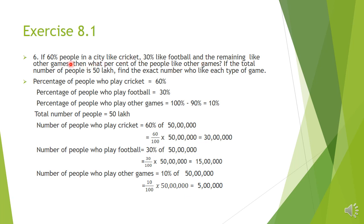The percentage of people who like different games are given: cricket-liking people 60%, football-liking people 30%, and the remaining like other games. To find the percentage for other games, we subtract 60% and 30%, getting 90%, and then subtract from 100%. So 100% minus 90% equals 10%. People who like other games are 10%.